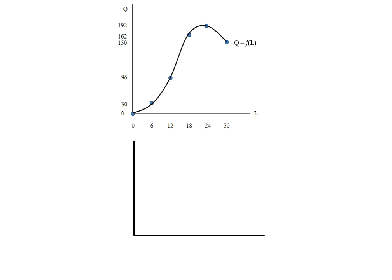The top graph is our total product function, our production function, that we found in our last screencast, where quantity of output is a function of labor. I'm going to again put labor on the horizontal axis, but on the vertical axis I'm going to plot the average product of labor.